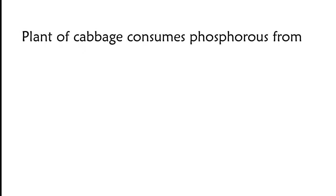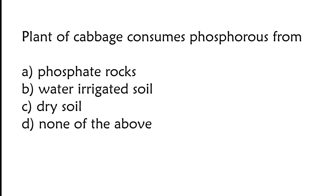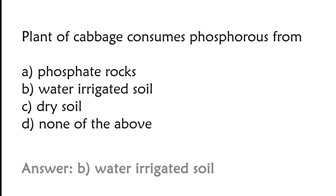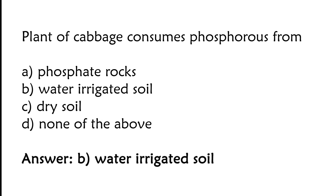Plants of cabbage consume phosphorus from — options: phosphate rocks, water-irrigated soil, dry soil, none of the above. The correct answer is option B. Plants of cabbage consume phosphorus from water-irrigated soil.